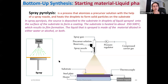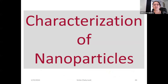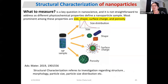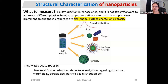Next, we'll quickly cover characterization of nanoparticles. Structural characterization is a difficult task — we need to measure size, shape, surface charge, and porosity. Structural characterization refers to investigation of structure, morphology, particle size, particle size distribution, and so on. There is no straightforward answer to what to measure because every kind of nanoparticle has a different application and requires different characterization.